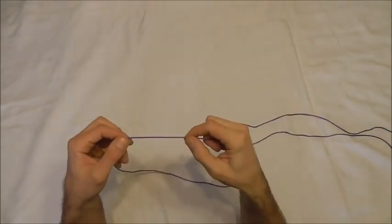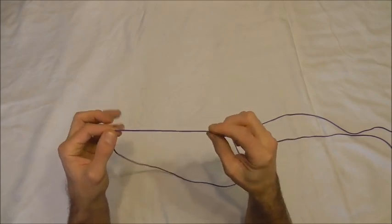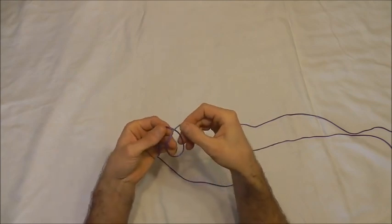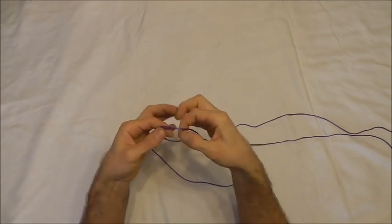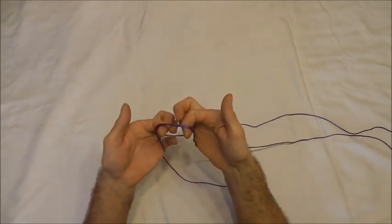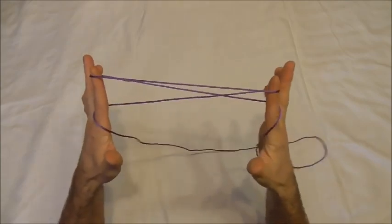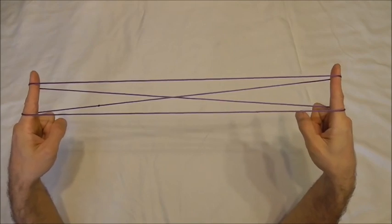To do the string figure I want to start with the Murray opening or index opening and to do that I'm going to form a loop by taking the right string over the left. Then from behind I'm going to insert my pointer fingers into that loop, rotate my hands around and spread my hands apart.